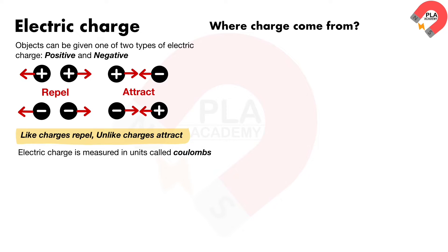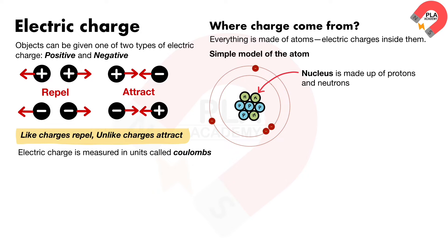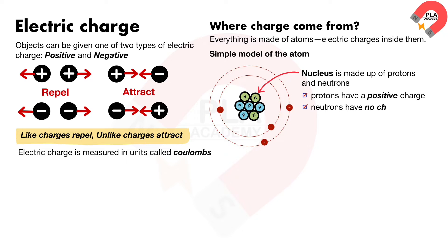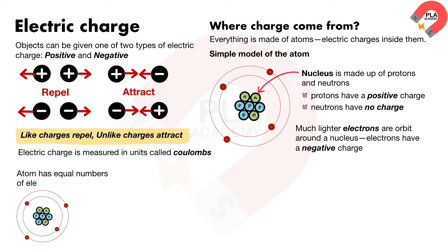Where do charges come from? Everything is made of tiny particles called atoms, which have electric charges inside them. A simple model of the atom is shown in the diagram. There is a central nucleus made up of protons and neutrons. Protons have a positive charge. Neutrons have no charge. Much lighter electrons are orbiting around the nucleus. Electrons have a negative charge. Atoms have equal numbers of electrons and protons, so the net charge is zero.